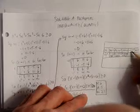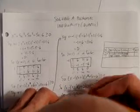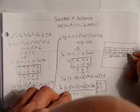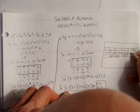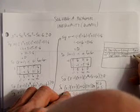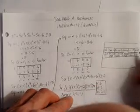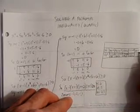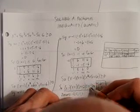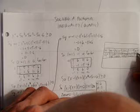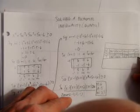We have two more intervals. Between negative 1 and positive 1, try 0. Zero minus 1 is negative, but 0 plus 1, 0 plus 2, and 0 plus 3 are all positive. Three positives and a negative multiply to give a negative. For x greater than 1, pick a large number like 10. All four brackets — 10 minus 1, 10 plus 1, 10 plus 2, 10 plus 3 — are positive, giving a positive result.